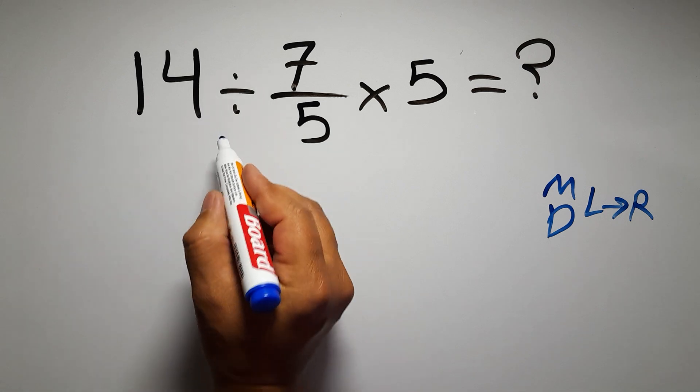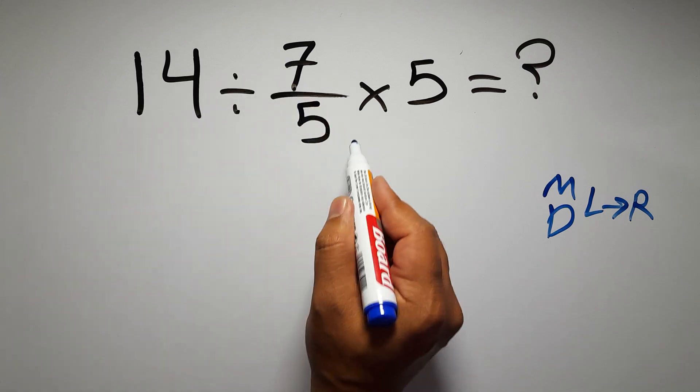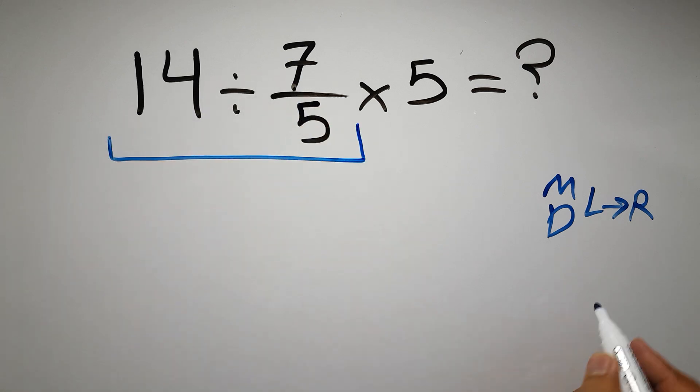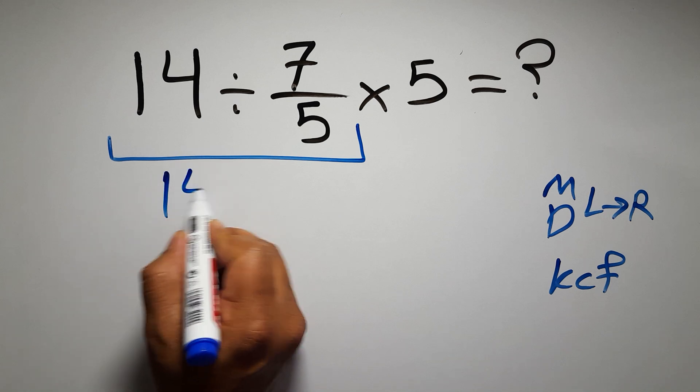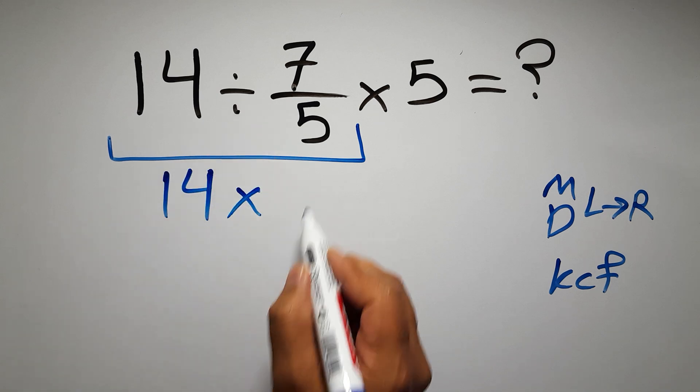So first, this division: 14 divided by 7 over 5. According to the KCF rule, K stands for keep, C stands for change, and F stands for flip. We can write: keep the first fraction, change division to multiplication, and flip the second fraction.